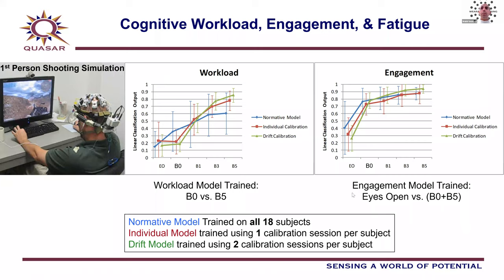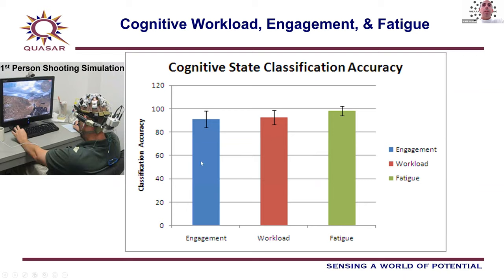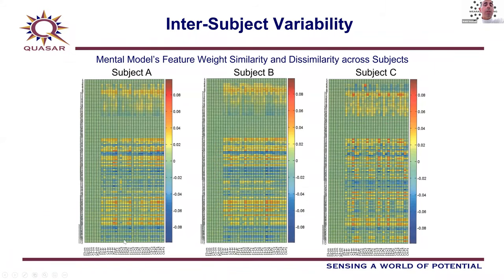For engagement, we created a model using the NVN-PDF output, training on eyes open versus both easy and hard tasks. In the output, eyes open states are classified as low, and all task conditions are classified as high — that's how we get an engagement model. It's not something defined abstractly as engagement; we defined it by providing two sets of training files and interpreted the result as engagement. Overall, classification accuracy is over 90%. Looking at feature weights across subjects, some subjects have very comparable weight distributions and could likely share a model, while others show very different patterns — illustrating why individualized training matters.